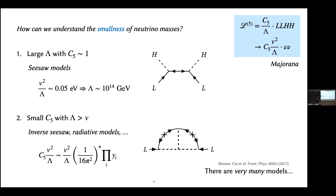If the neutrinos are Majorana, there are really two limiting ways to arrange for the masses to be small. One is that the scale lambda is very large — I'll call these seesaw models. The general suppression is v-squared over lambda, so if C5 is some order-one number, lambda being very large suppresses the neutrino masses. The 10-to-the-14 GeV scale is roughly close to scales predicted in grand unification, which is one argument in favor of seesaw models. Such a diagram involves only one field extending the standard model.